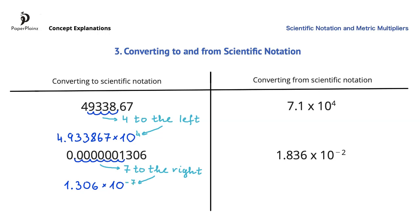An important point is that when we move the decimal point to the left, we get a positive power, and when we move it to the right, we get a negative power. Another way to remember this is that when we convert a large number into scientific notation, the power will be positive, and when we convert a small number into scientific notation, the power will be negative.